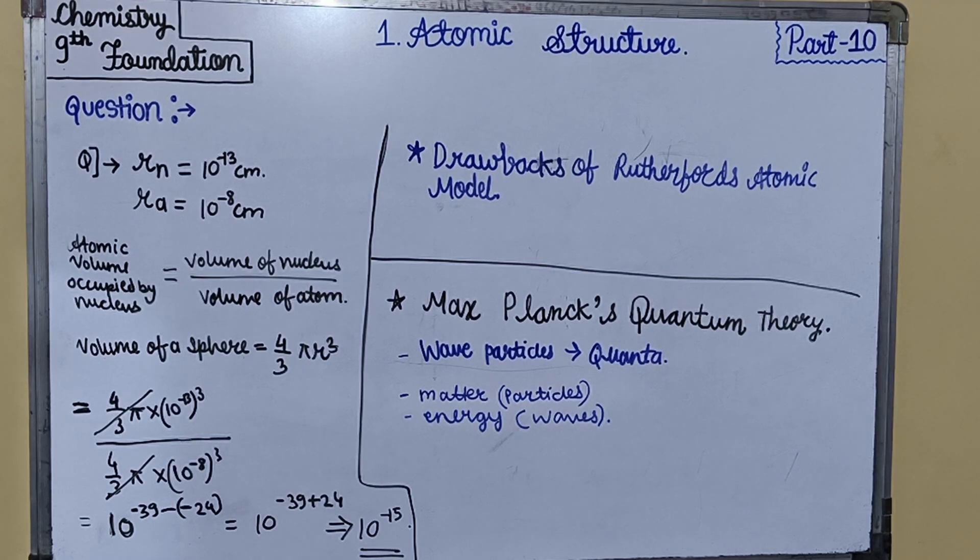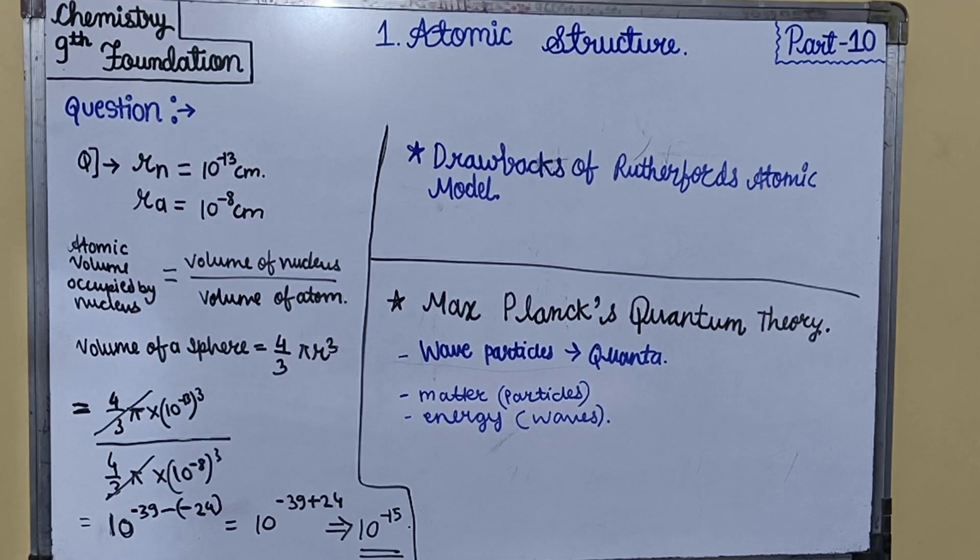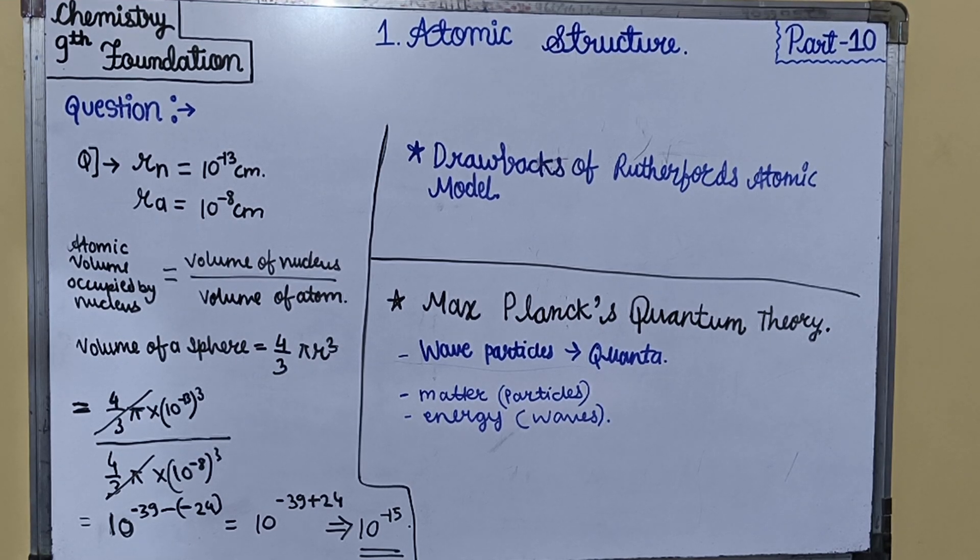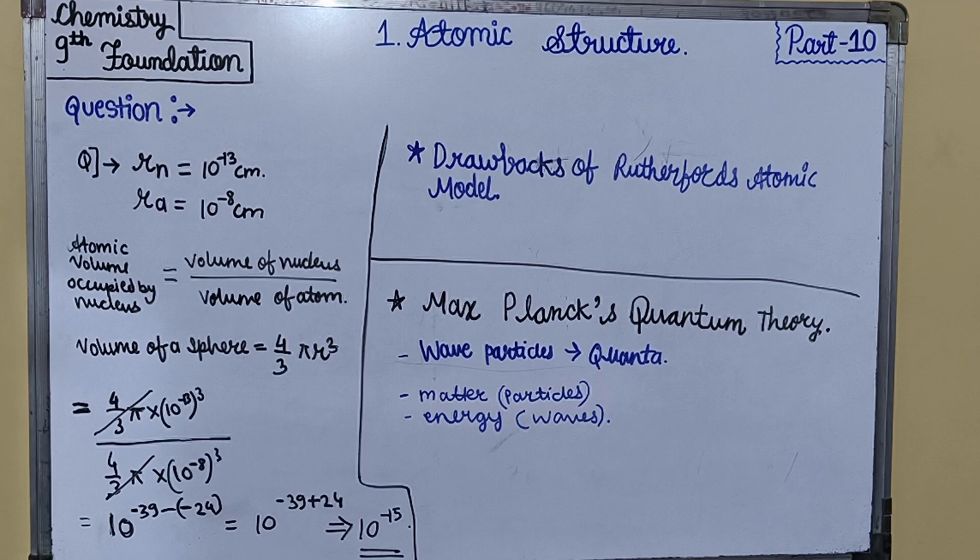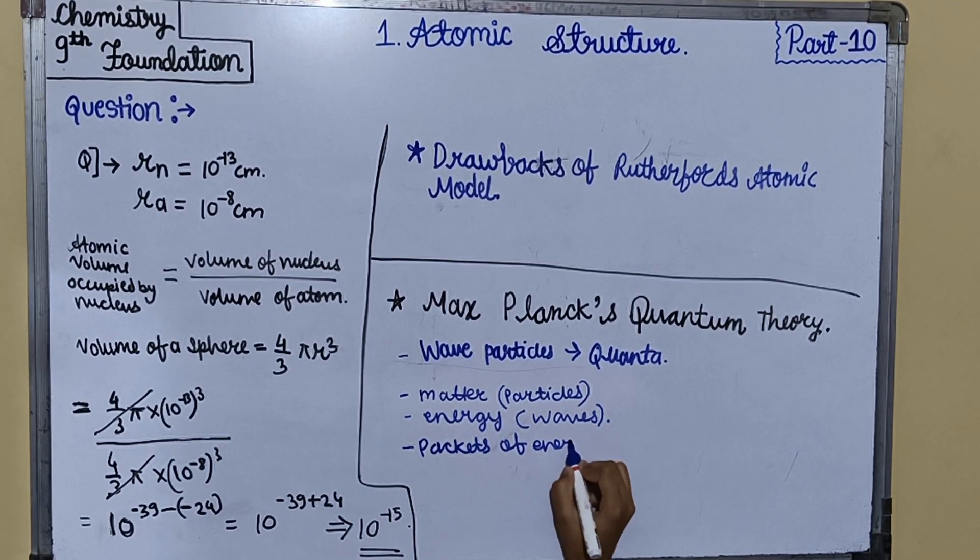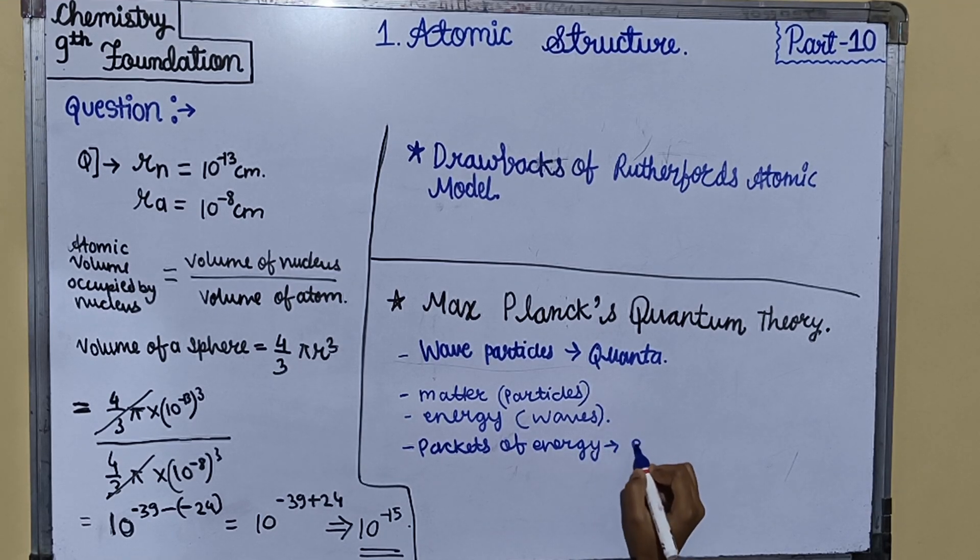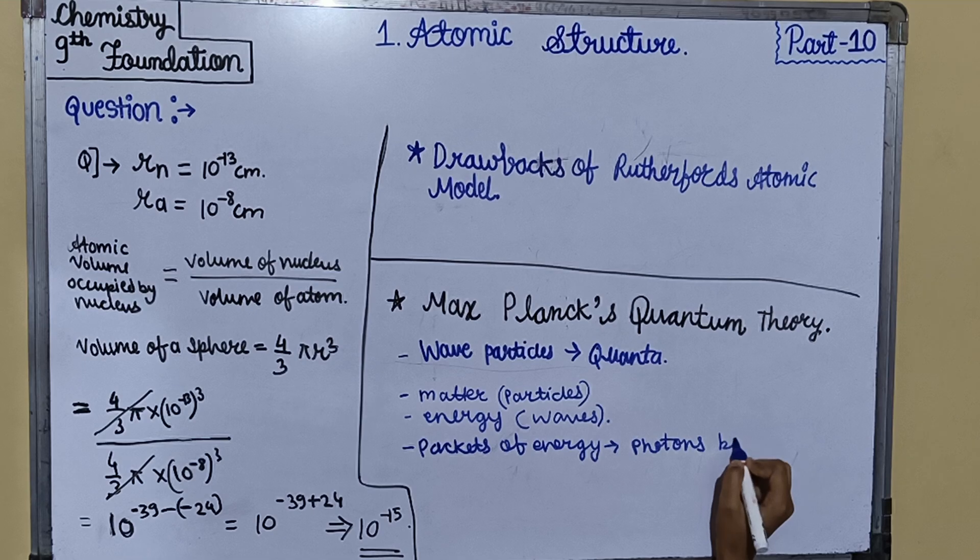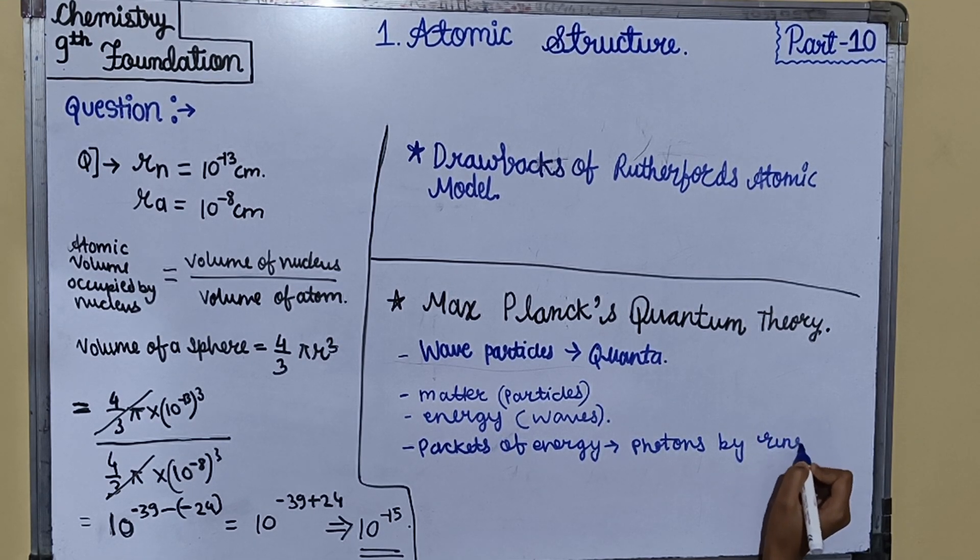Max Planck's quantum theory also tells us how an atom absorbs or loses energy. From a slightly opened tap, water is lost discontinuously in the form of drops. Similarly, an atom loses energy discontinuously in the form of packets of energy, each of which is known as quantum. Plural is quanta. These packets of energy were called photons by Einstein.